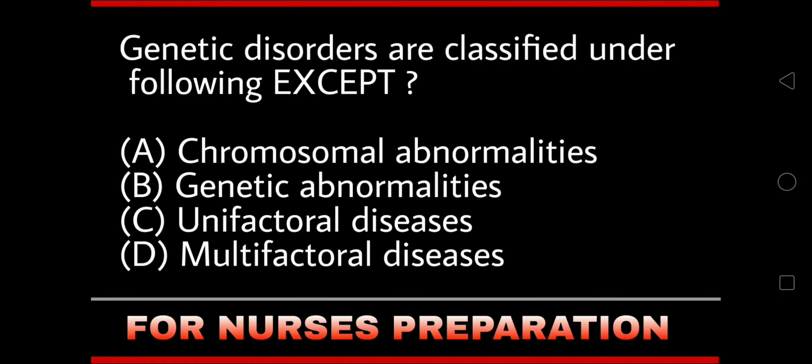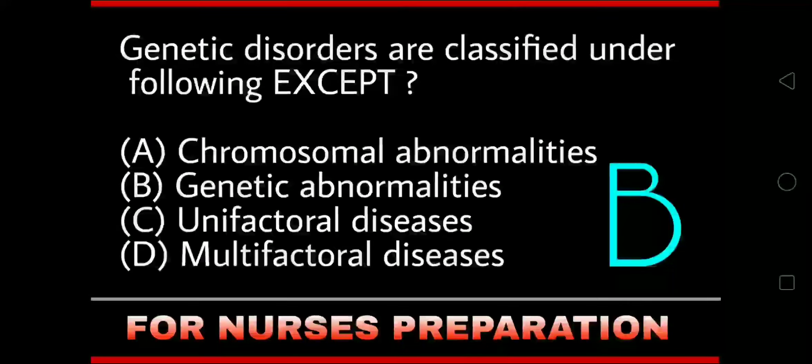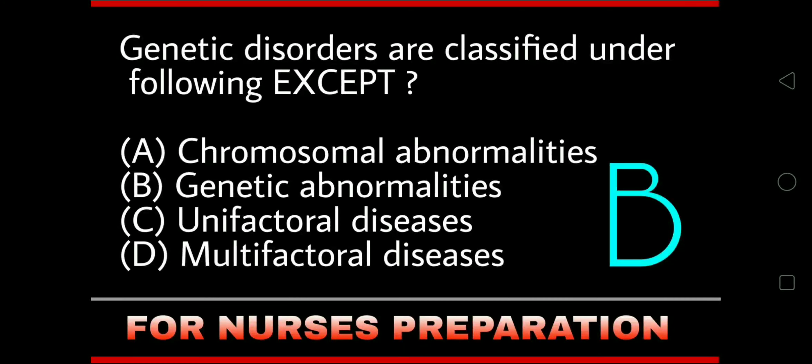Genetic disorders are classified under the following, except — Option A: chromosomal abnormalities. The right answer is Option B: genetic abnormalities. Genetic disorders can be classified under chromosomal abnormalities, unifactorial diseases, and multifactorial diseases.